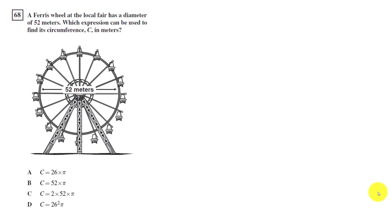Read the question carefully, pause the video, give it a try before I go over the answer. When I read the question, I like to highlight the most important information. A Ferris wheel at the local fair has a diameter of 52 meters. So the diameter and 52 meters are very important. Which expression can be used to find its circumference, C, in meters?